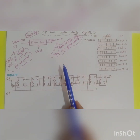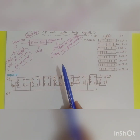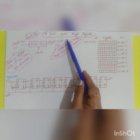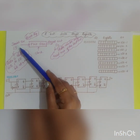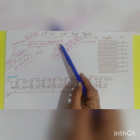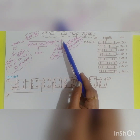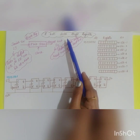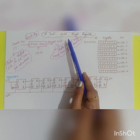Today's topic is the 8-bit SISO shift register. SISO stands for Serial In Serial Out, meaning the input is given in serial and the output is also taken in serial manner. A shift register is a register in which binary data can be stored and that data can be shifted either left or right when a shift signal is applied.